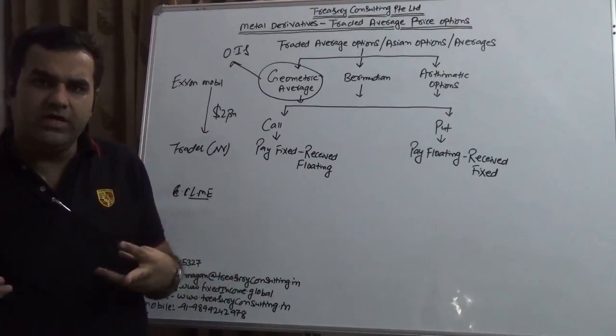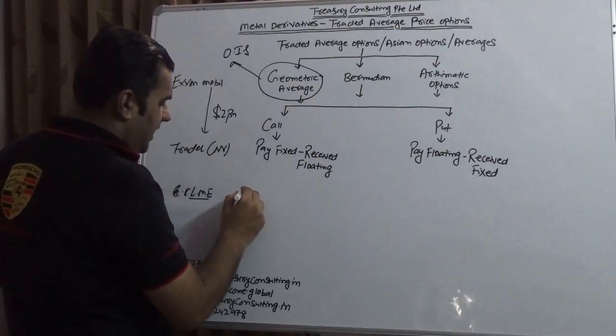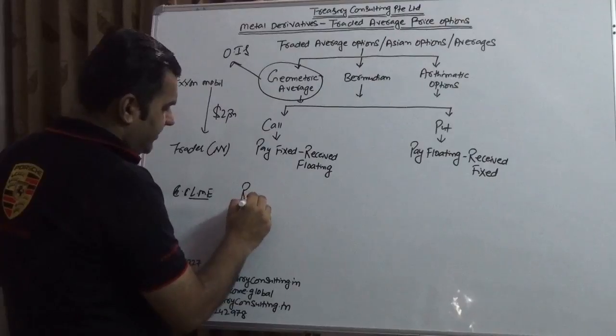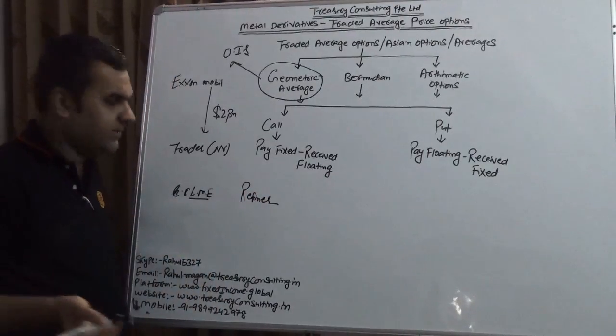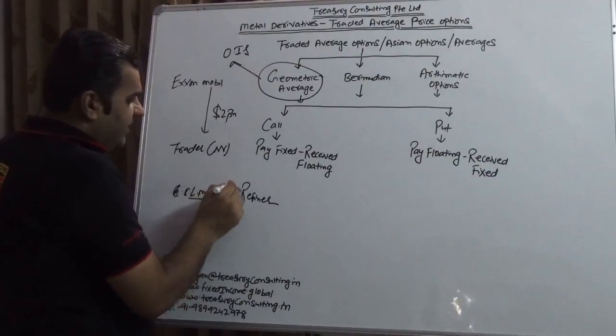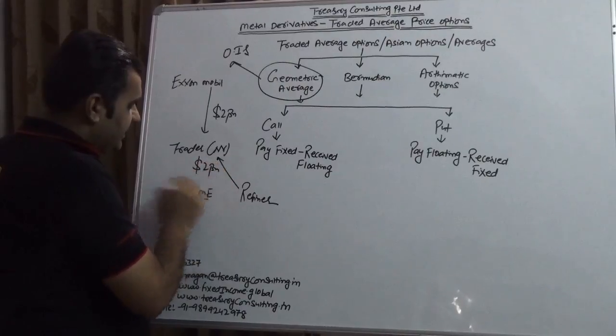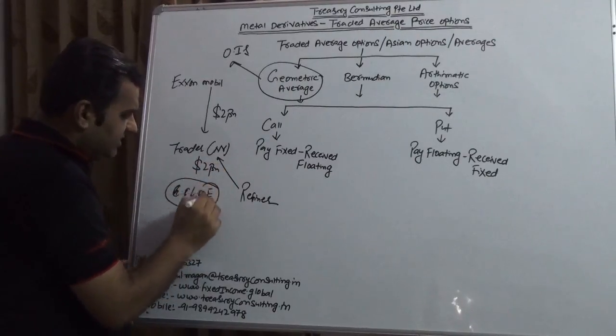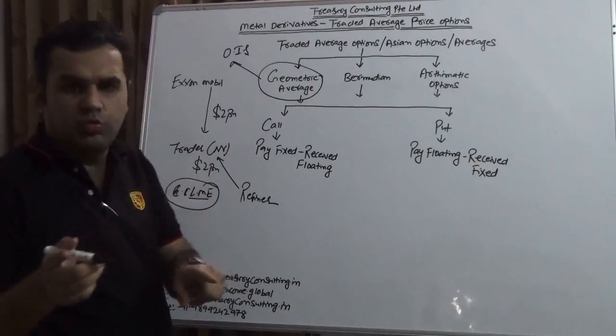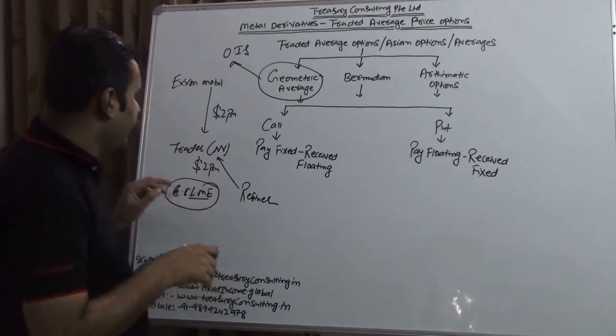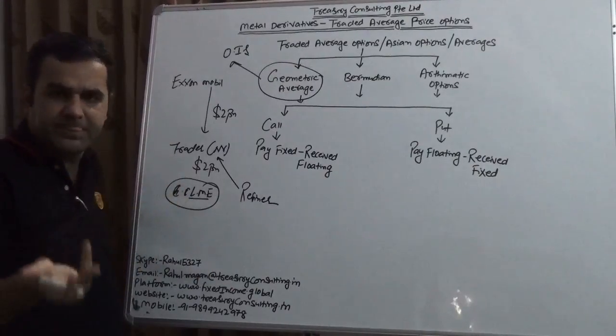ExxonMobil wanted to trade—I'm taking a hypothetical example that this trader is a pretty big man and they wanted to have a two billion dollar trade. ExxonMobil is actually a producer, remember, not a refiner. It's a producer, not a refiner. Let's take one third party which is a refiner. Any refinery trader, this refiner also wanted to trade, assuming this is again two billion. This trader has to report two trades to LME Clear: trade number one is ExxonMobil to trader, trade number two is refiner to trader.